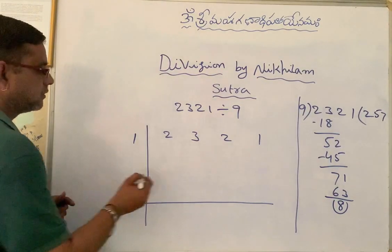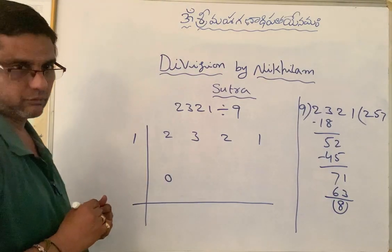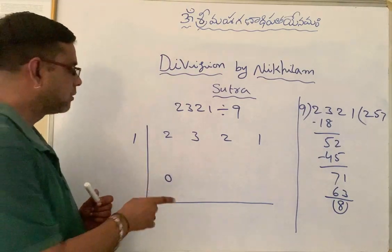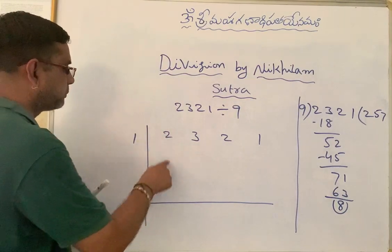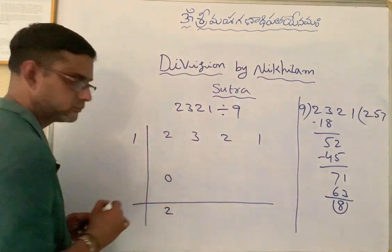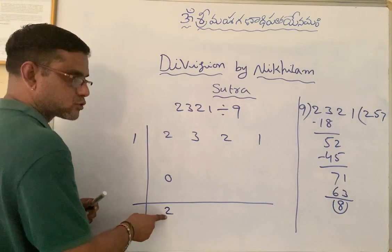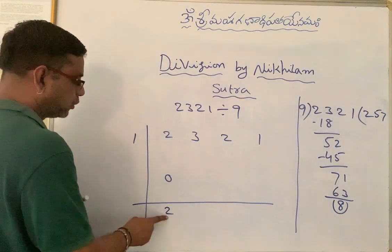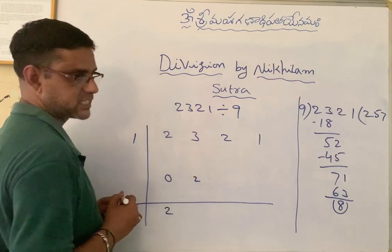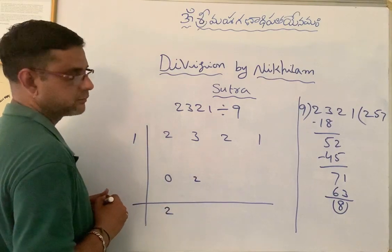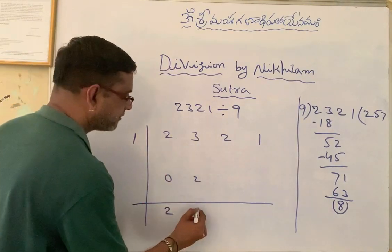Now first put 0 over here — for every number put 0 over here first. Add these two: 2 plus 0 is 2. Now multiply this 2 with Nikhilam: 2 ones are 2. Write it over here in the next part. Now add 3 and 2, getting 5.